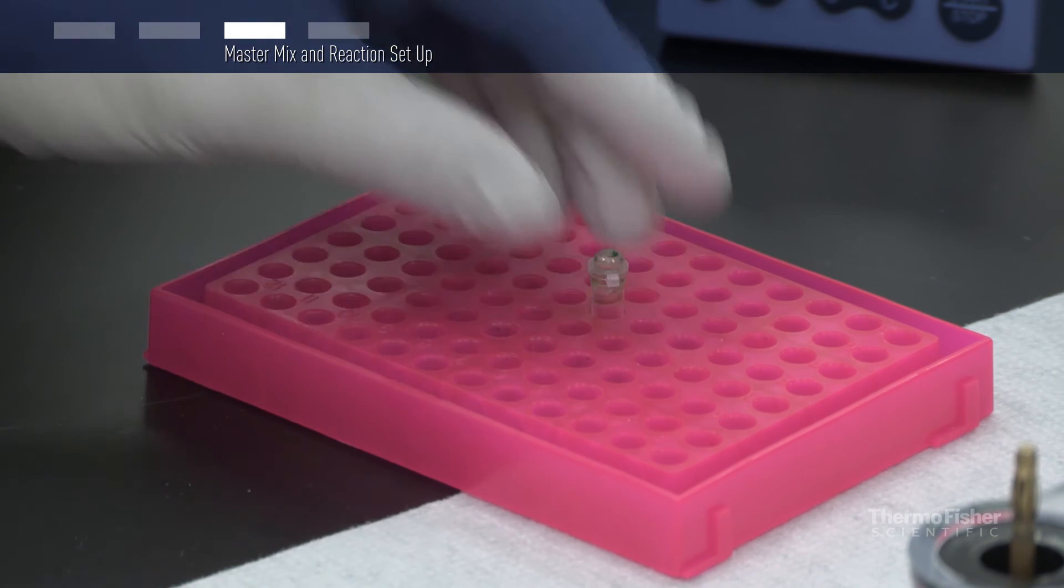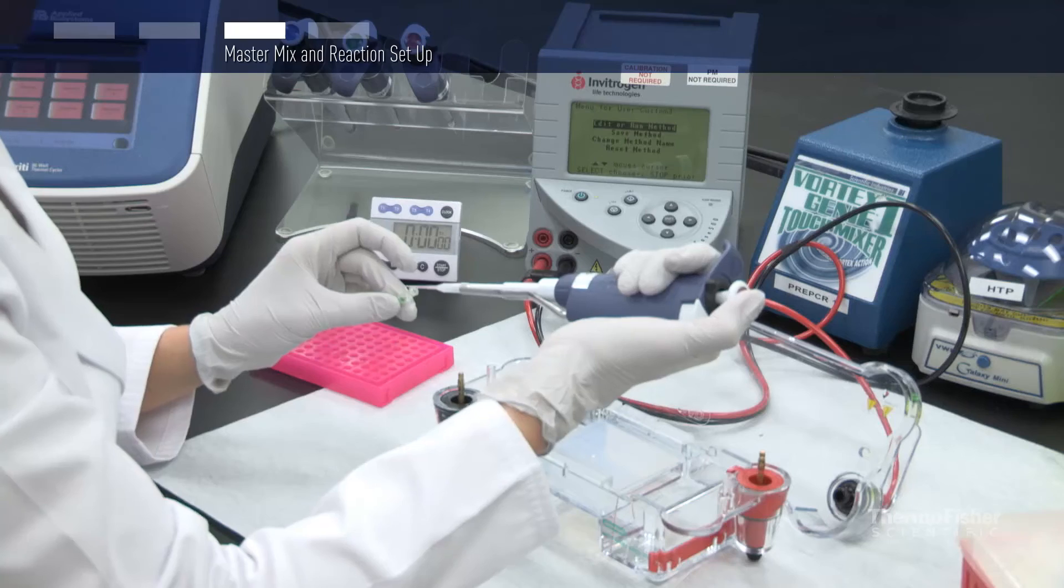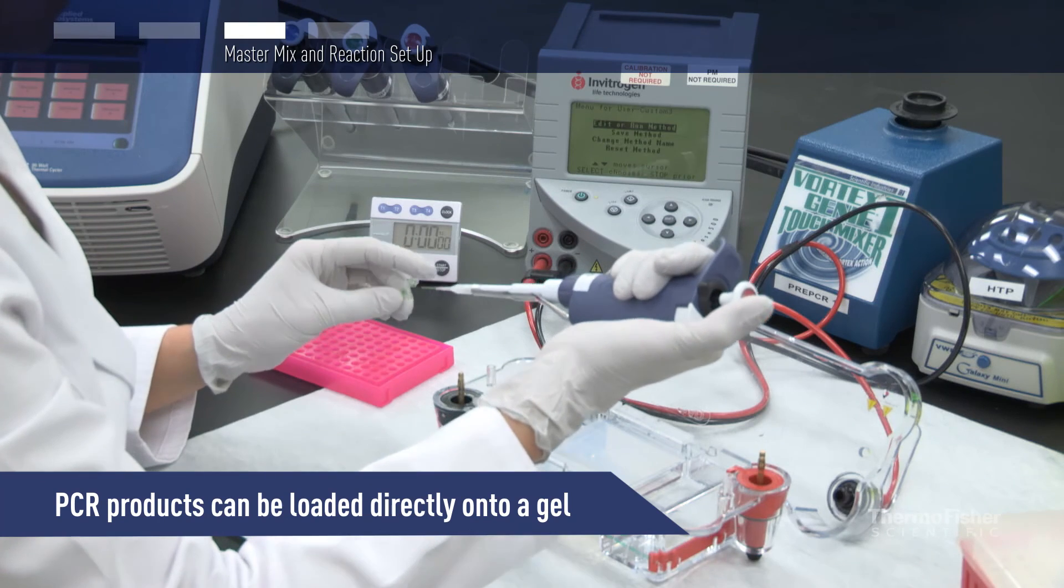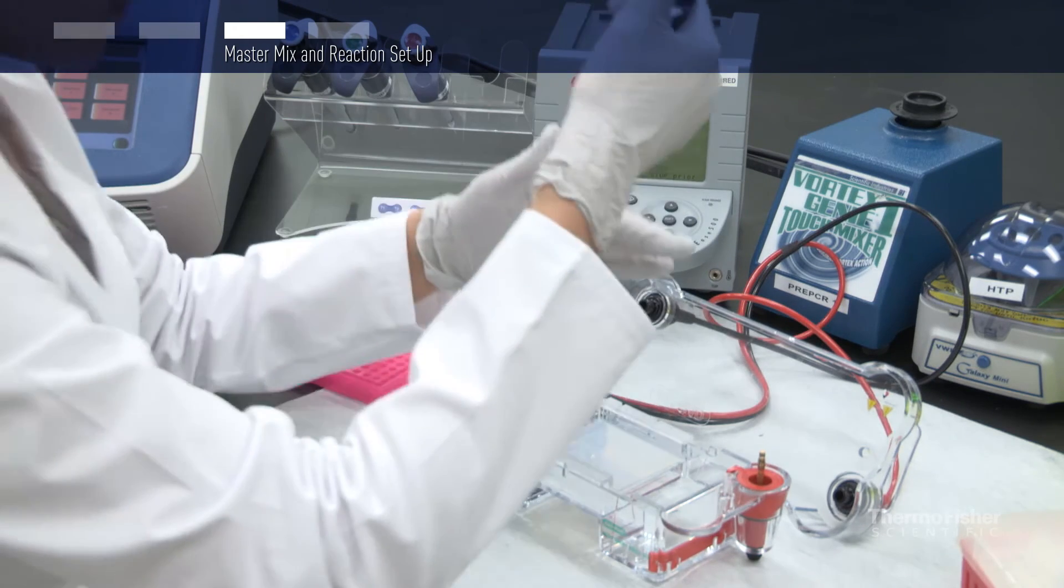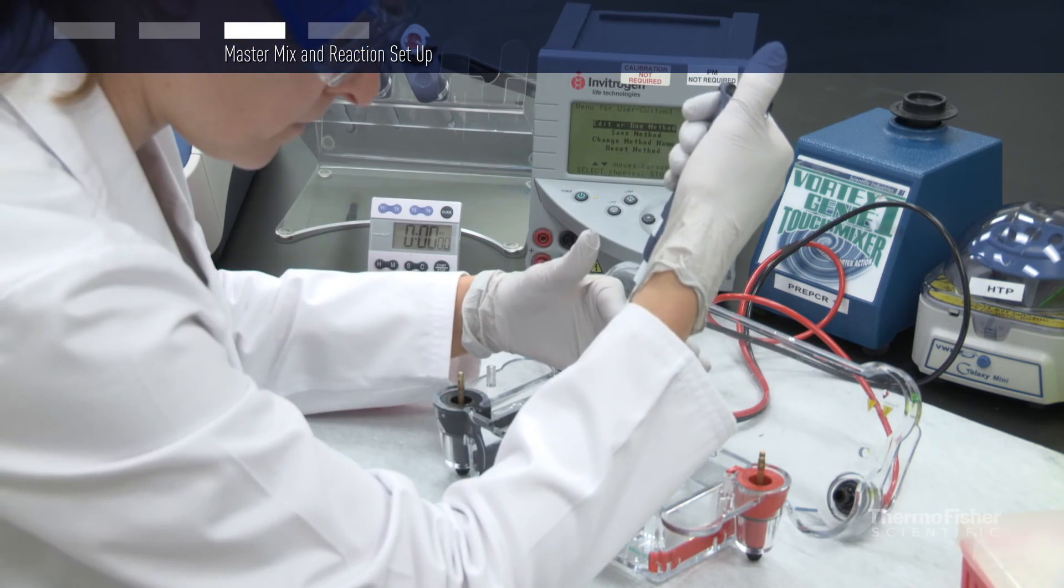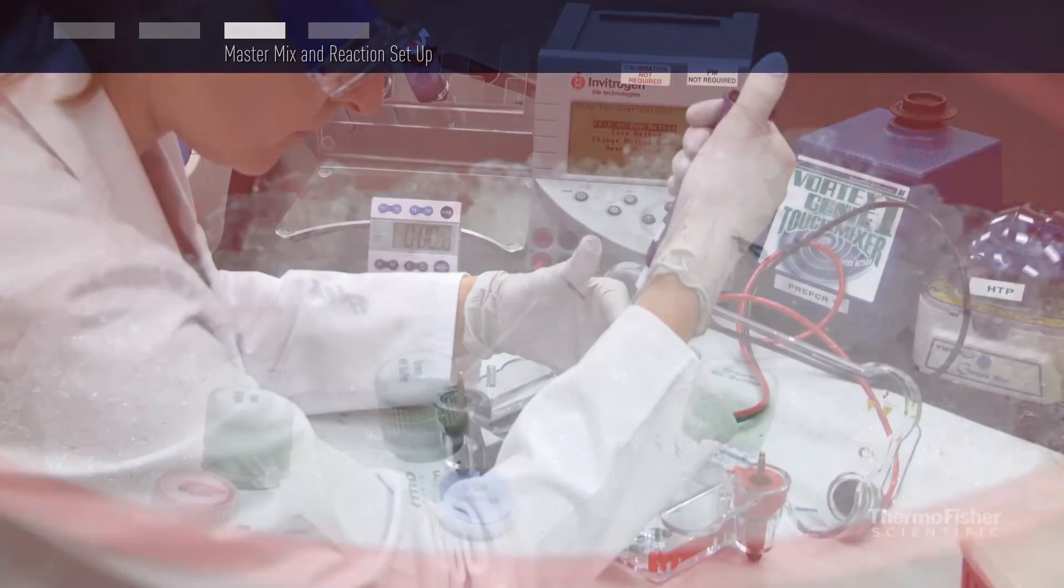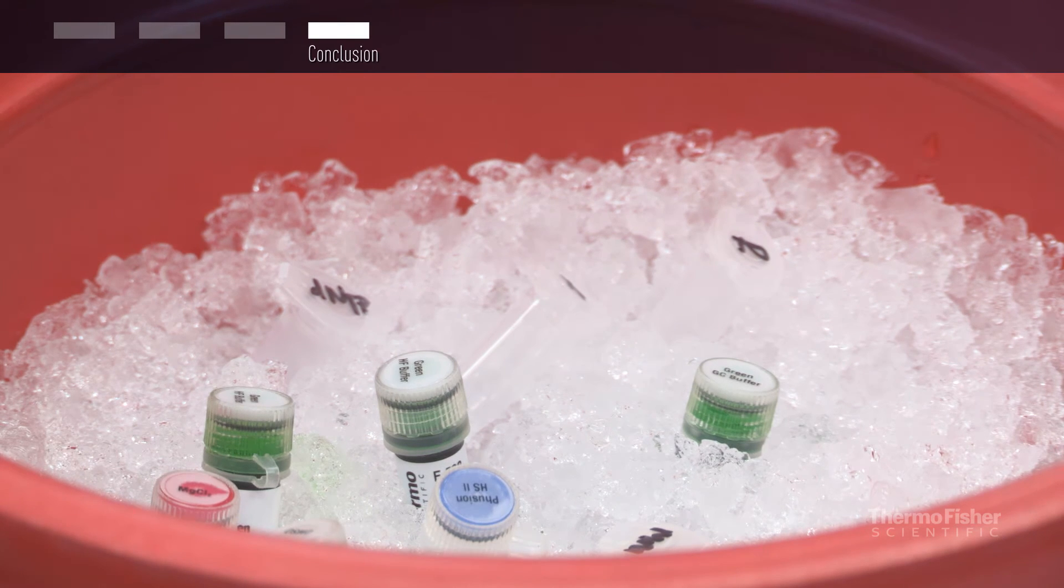If using Fusion Green polymerases, after the reaction is completed, PCR products can be loaded immediately onto a gel. The green buffer contains a density reagent that allows direct loading of PCR products on a gel and two dyes for monitoring of electrophoresis progress. The colored buffer does not interfere with PCR performance.